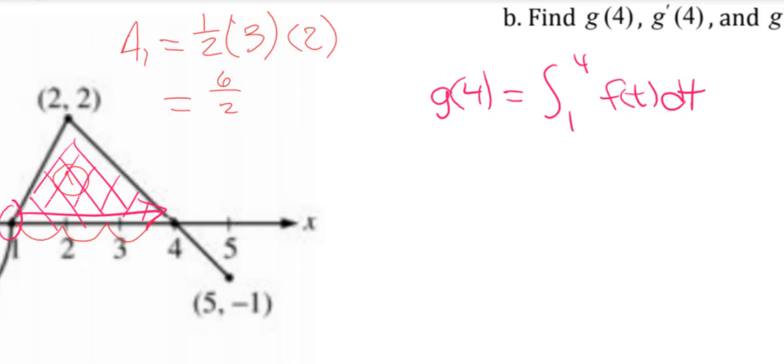We already did that in part A, so that's a little bit of review. So our integral from 1 to 4 of f of t dt would give us a value of 6 over 2, or just 3. So that's it. That's all you got to do for that part.